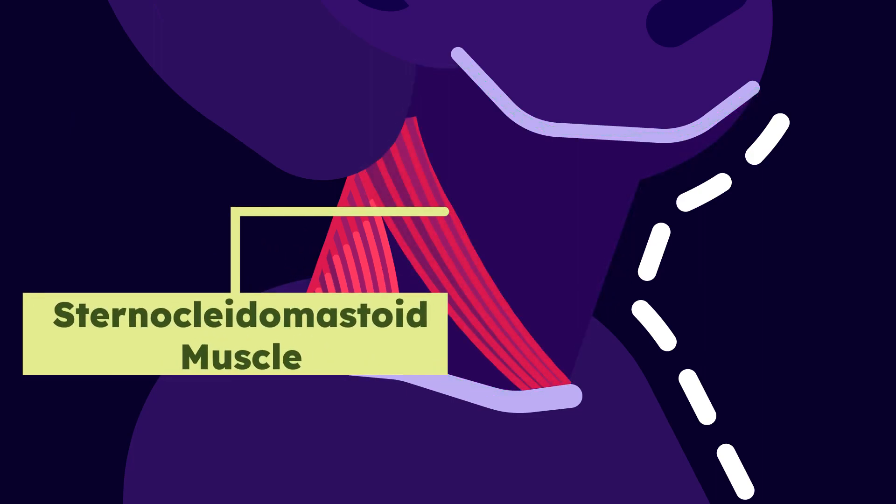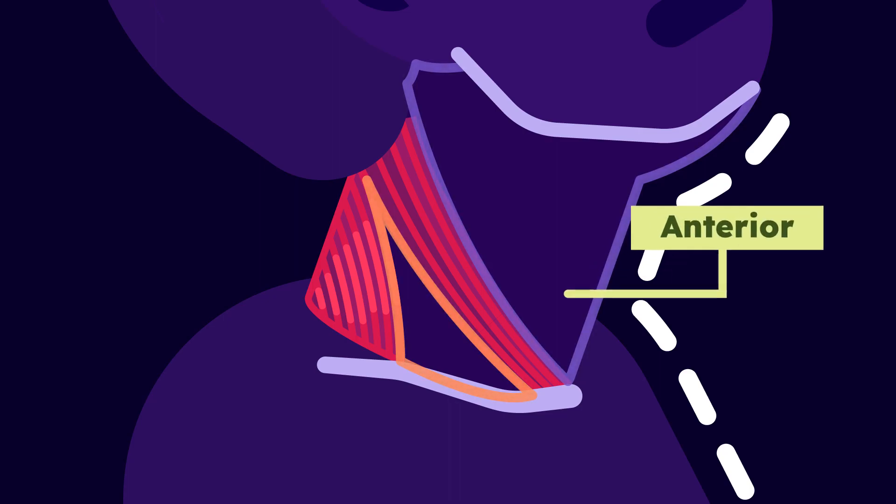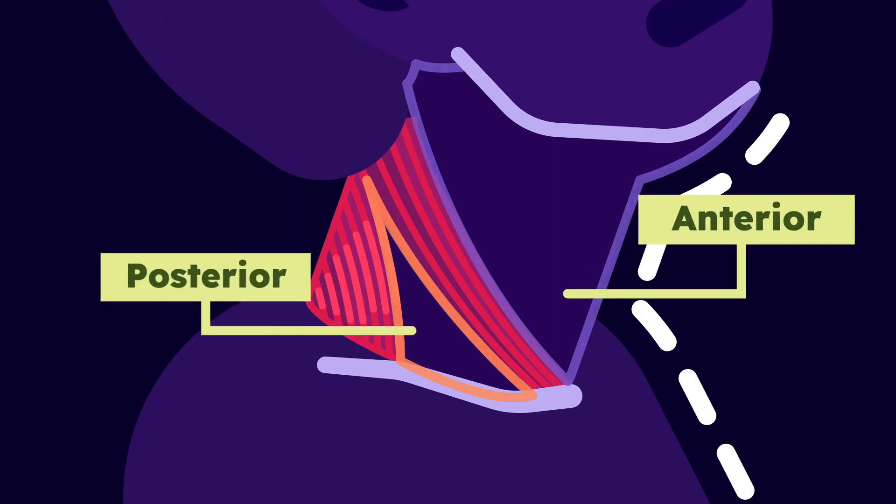The sternocleidomastoid muscle will divide the area into two major triangles: the anterior and posterior. Going deeper, these major parts can be divided again.